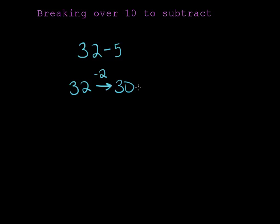Now I have to subtract 3 more because what I'm trying to subtract in all is 5. So if I subtract 2 and then I subtract 3, I'll get a total of 5 that I'm subtracting.